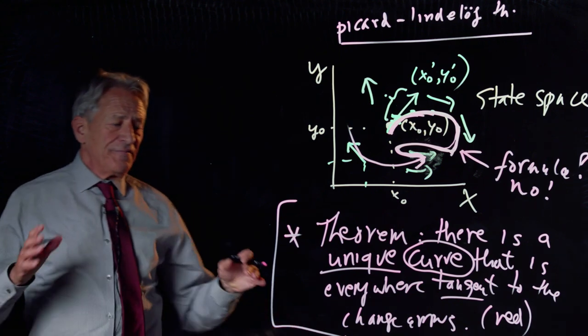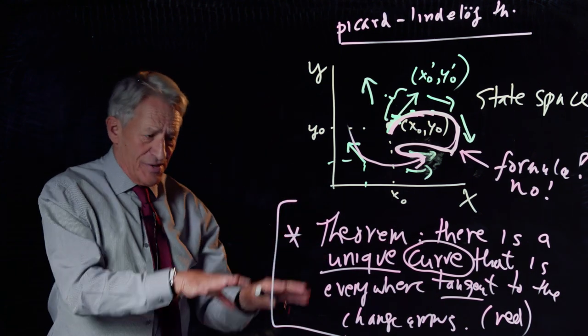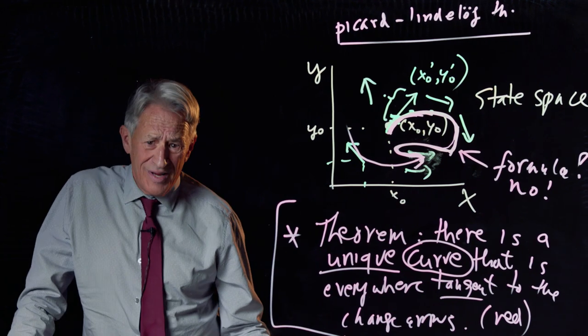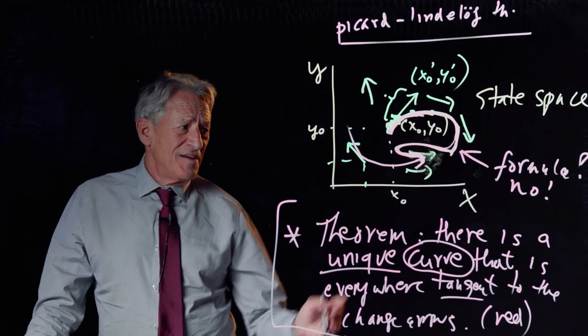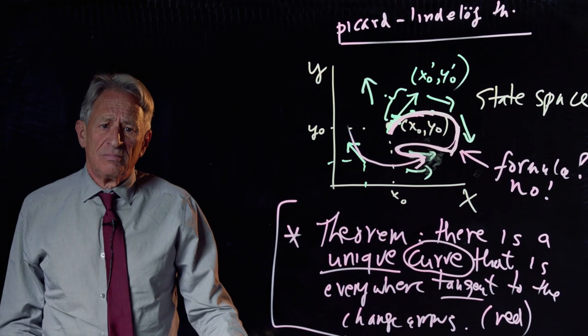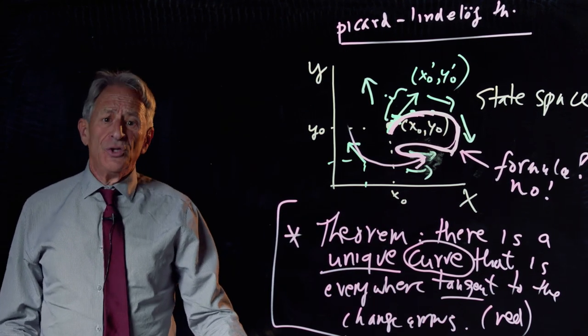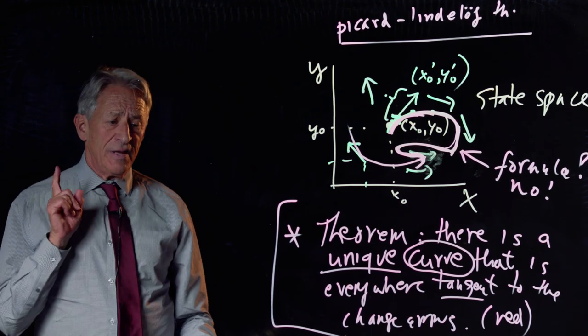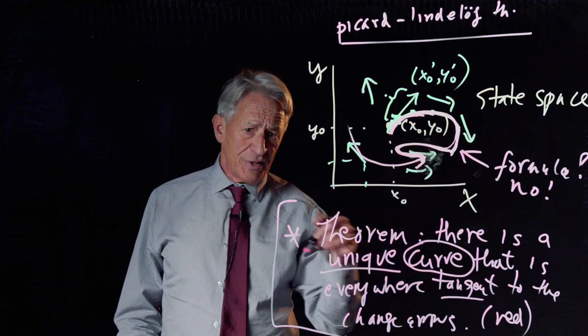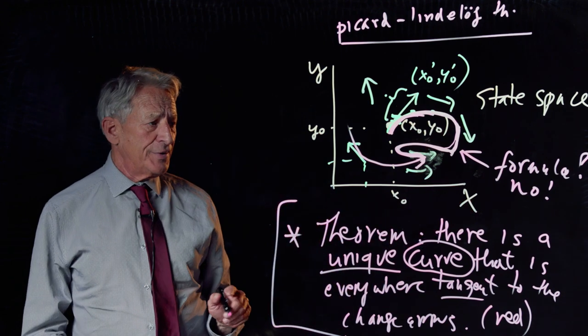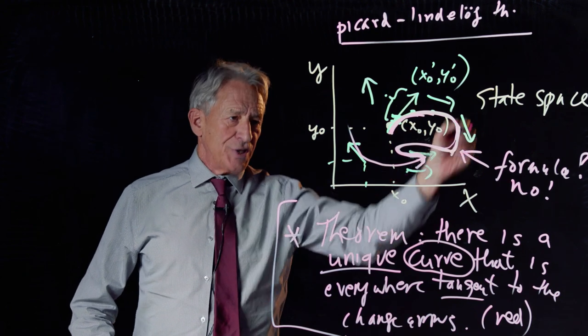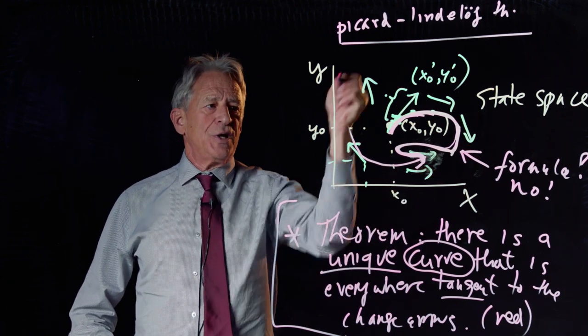So we're in a funny situation. We're guaranteed that this object exists. But in 99.9% of the cases, the formula for the red curve is unknowable. Unknown and unknowable. Even in the shark-tuna case, the very, very simple shark-tuna case of the two-variable differential equation, you remember the round trajectories that arose in the shark-tuna equation.